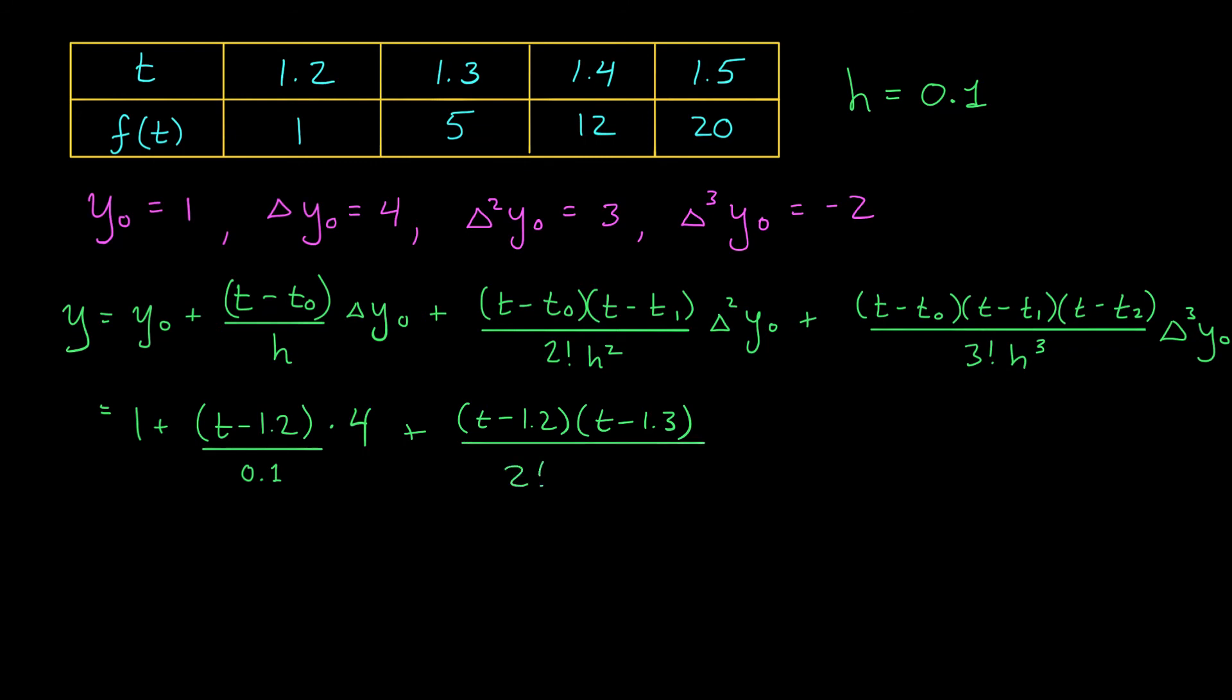I divide by 2 factorial, times h squared, 0.1 squared, and I multiply by my second forward difference, which is 3, times 3.